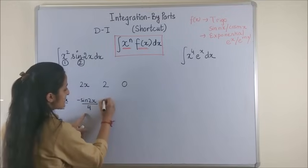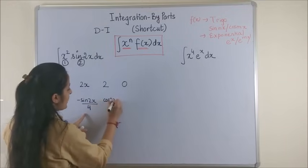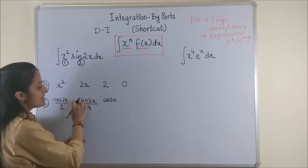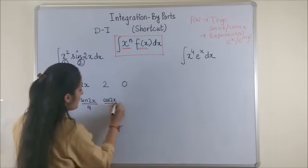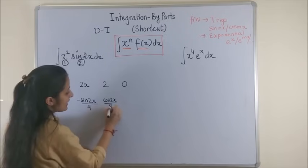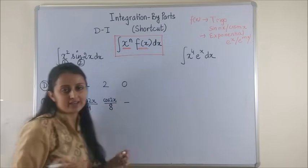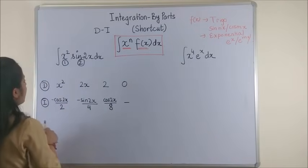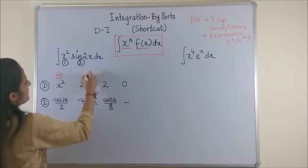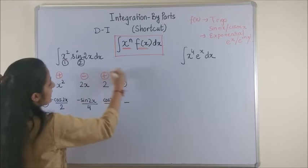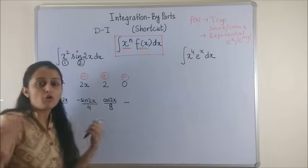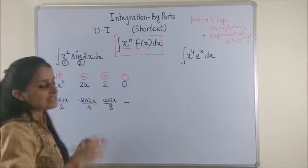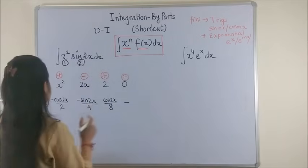Once again integrate this, this would be cos of 2x because integral of sine is again minus. So minus and minus would become plus upon 4 into 2 again 8, and here I leave it blank because it's anywhere zero on the top. Having done that, now we are going to take the plus sign here, minus, plus and minus.